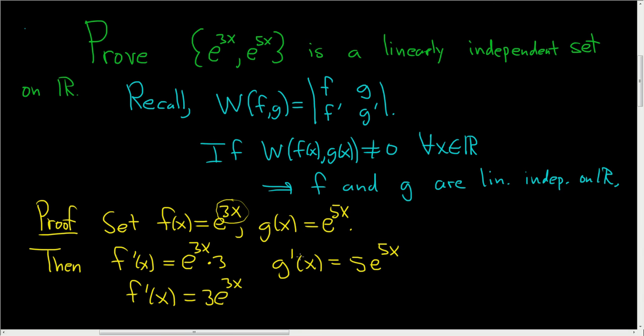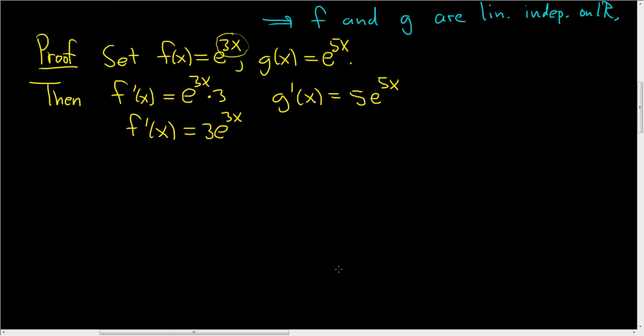Now we're ready to compute the Wronskian and show that it is not zero. So then the Wronskian of f of x, g of x, is equal to the determinant of f, so e to the 3x, and then f prime right below it, so 3 e to the 3x. And then here we have e to the 5x, that's g, and then g prime right below it, so 5 e to the 5x.